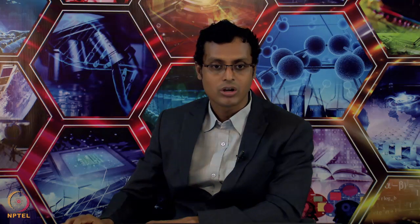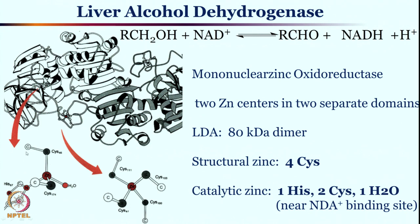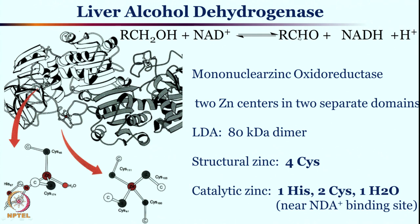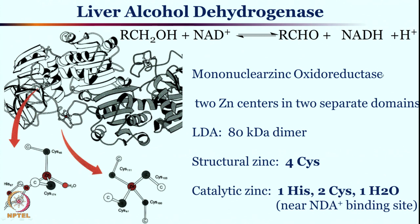The catalytic site zinc has one histidine, two cysteines, and one water molecule. This is your histidine, these are your two cysteine molecules, and there is a water molecule — giving a four-coordinated zinc. Remember, in the previous case of carbonic anhydrase there were 3 histidines; here there is only 1 histidine and 2 cysteines. The overall reaction is that alcohol is converted to aldehyde with the help of NAD+, which is converted to NADH while a proton is released.